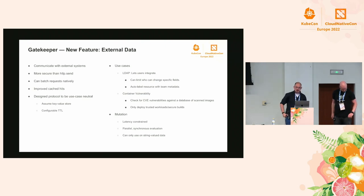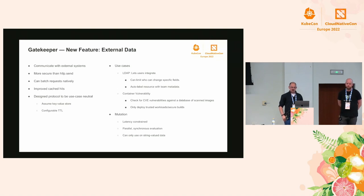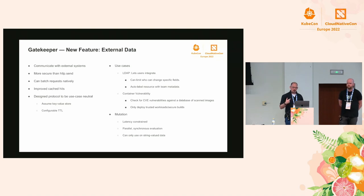One of the new Gatekeeper features is external data. This lets you communicate with external systems and it's more secure than http.send, and also more constrained. Whereas http.send lets you send arbitrary HTTP requests, external data treats whatever external data provider you're communicating with as a key-value store. It's able to batch requests and you get improved cache hits. When writing these data providers, you can configure things like how long to keep caches - you can tune it to your specific use case.